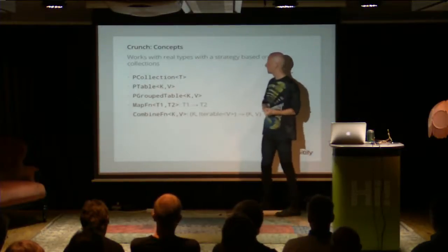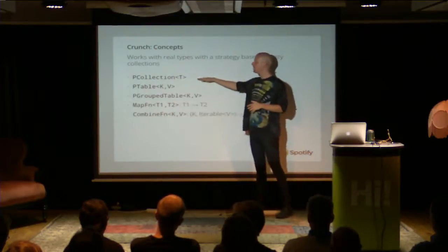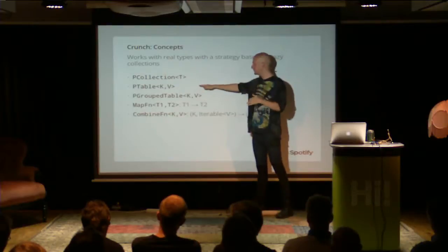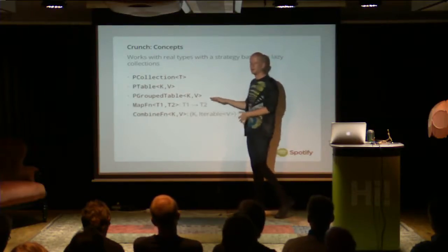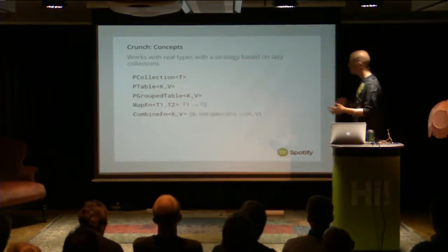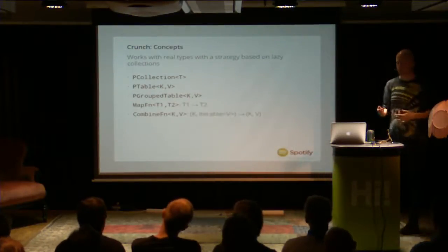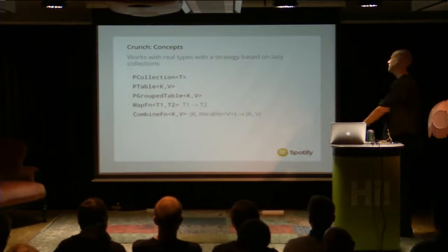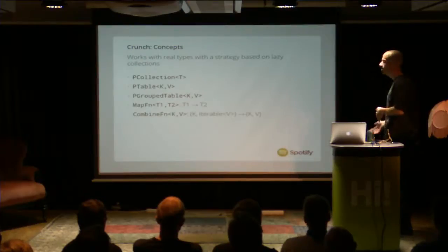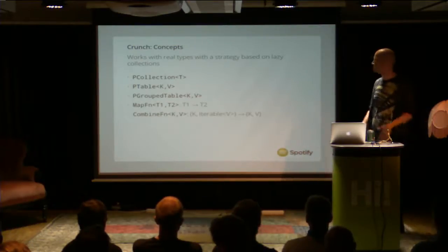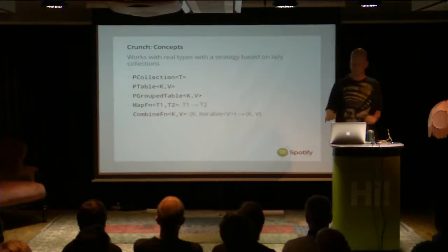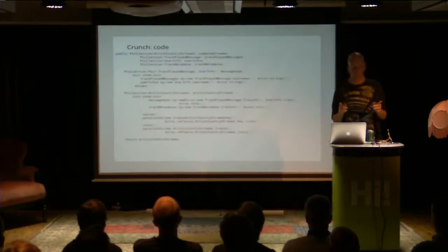Comparing with MapReduce: map tasks stay in PCollection; a map task that identifies a key turns a PCollection into a PTable; as you yield from mapper to reducers you get a PGroupedTable; your reducer operates on the grouped table to produce a table or collection. Because of how these types are constructed, you get static type safety all the way along. There are MapFunctions which transform one type to another, and CombineFunctions which take a key and an iterable of values and collapse them back.